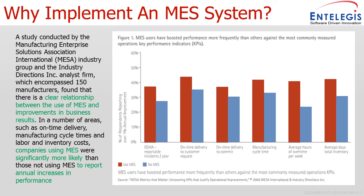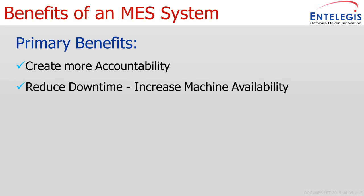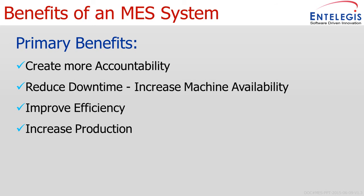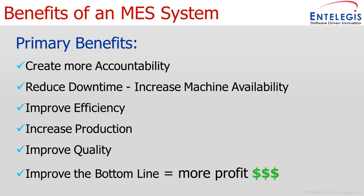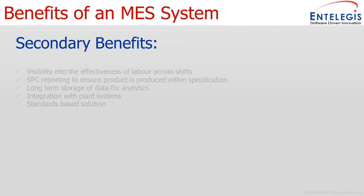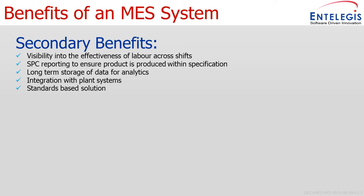The primary benefits: we create more accountability for operators and management; we reduce downtime by flagging it and viewing types of downtime in Pareto charts so that improvements can be made; it improves efficiency — we understand through reporting when machines are running below their capacity, thus increasing production; we can improve quality by identifying pinch points or areas within the process where bad quality is being introduced; and ultimately we improve the bottom line by creating more profit as waste and losses are eliminated and reduced.